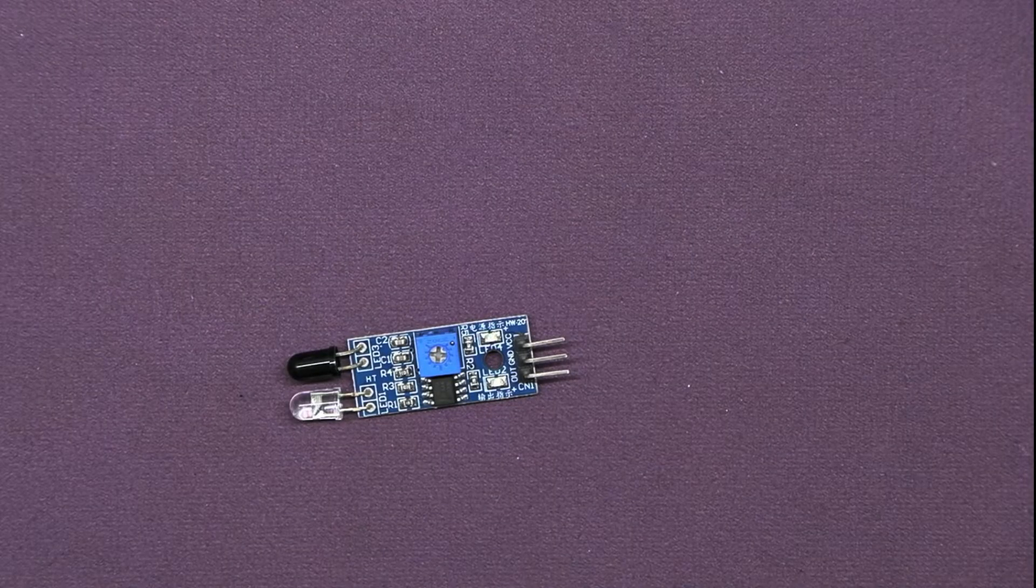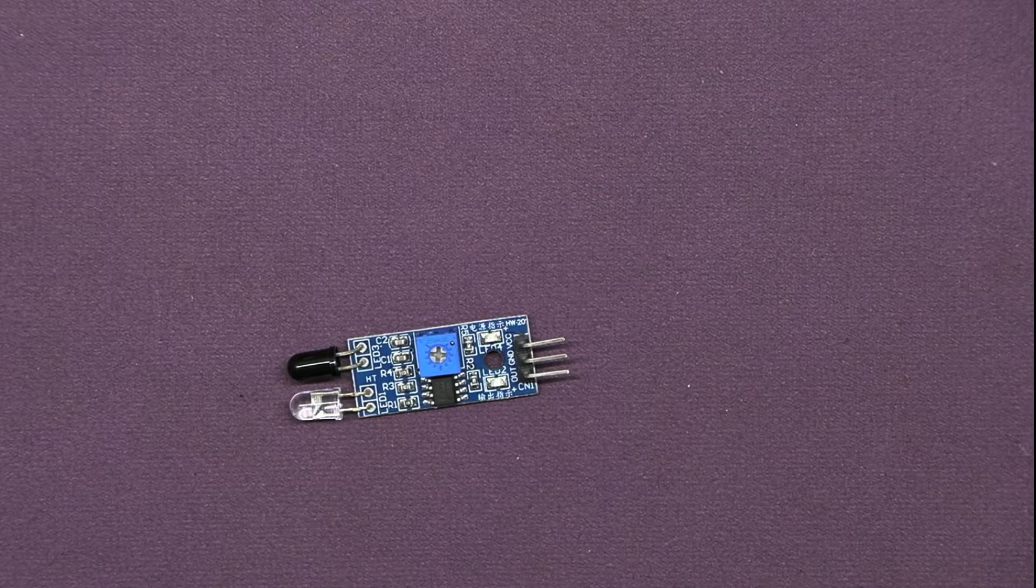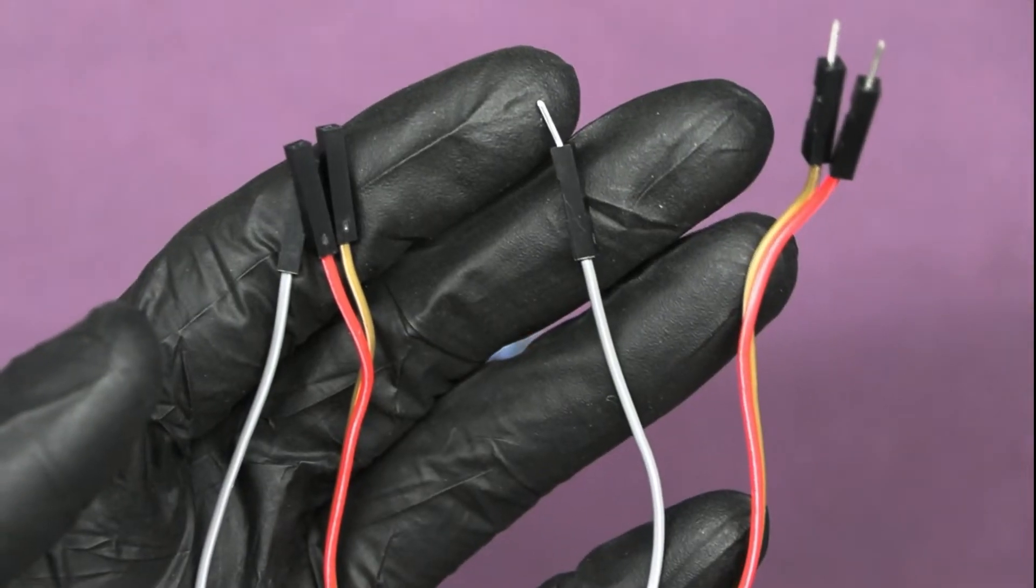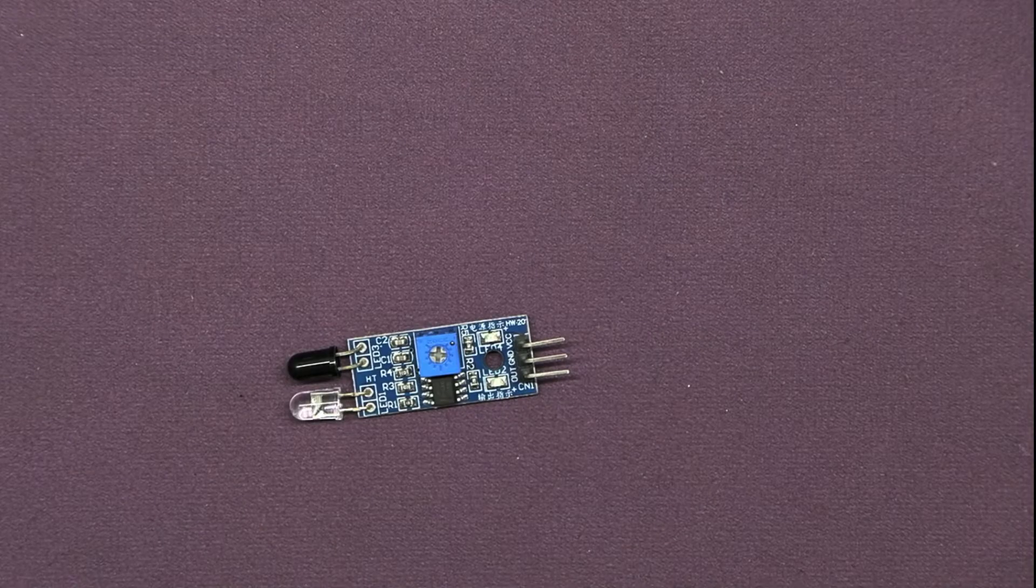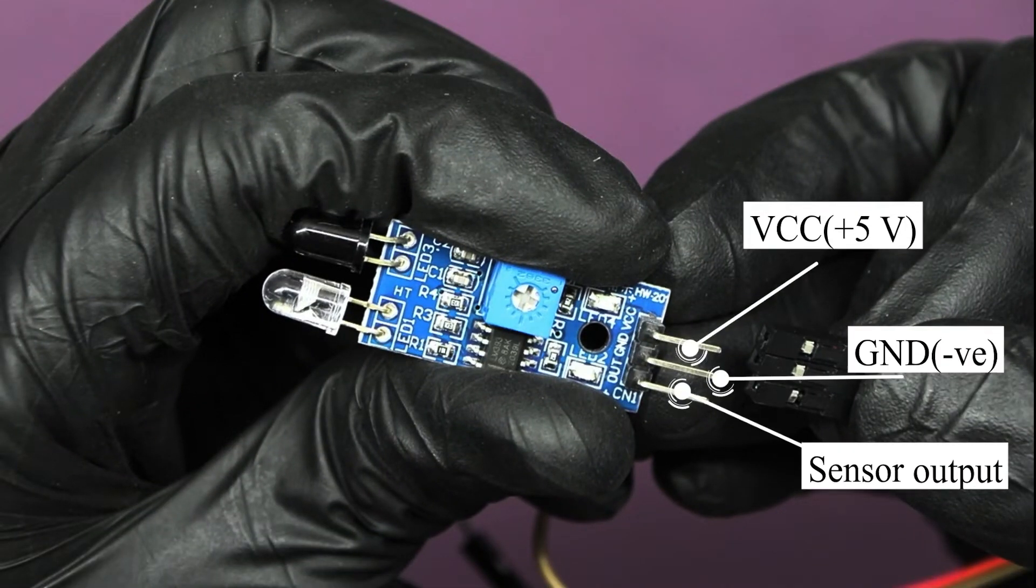Now, let's quickly go through the connections before we jump into coding. Insert male to female jumper wire to the IR sensor as shown in the video.